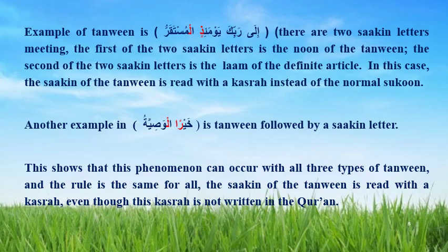Another example: Khayranil Wasiya. The tanwin is followed by a sakin letter, and as you see the tanwin is fath. So we say Khayranil — making kasra. This shows that the phenomenon can occur with all three types of tanwin, and the rule is the same for all. The sakin of the tanwin is read with kasra, even though this kasra is not written in the Qur'an.